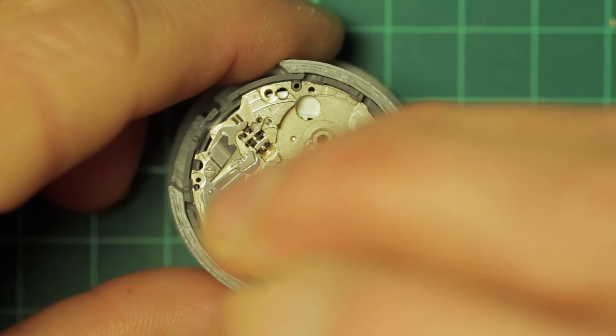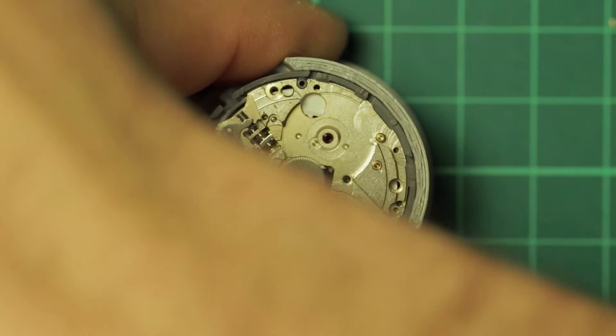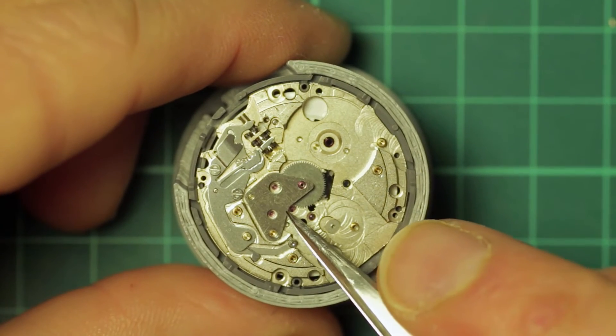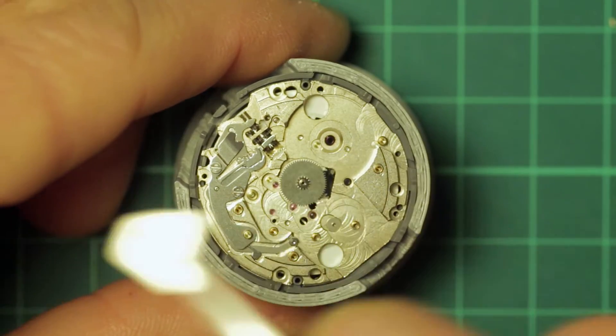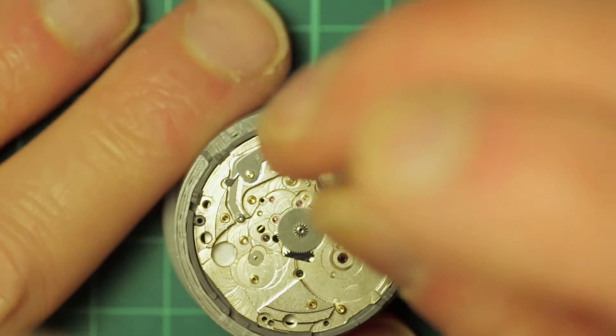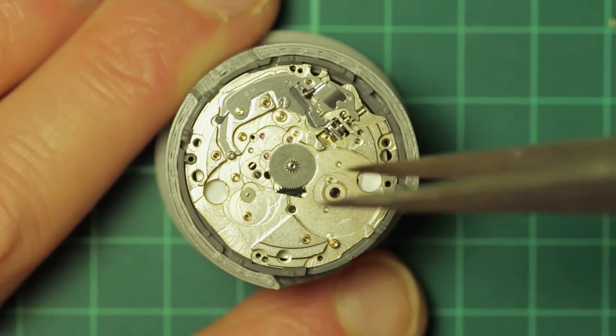And at this point the centre wheel bridge followed by the centre wheel. I don't actually lift the centre wheel away just yet because it's still secured in place by the cannon pinion on the other side.